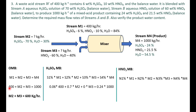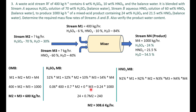From the overall mass balance: m2 + m3 = 1000 − 400 = 600 kg/hr. This is equation 1. From the sulfuric acid balance: 0.06 × 400 gives 24, plus 0.7 × m2 = 240. Rearranging, we can find m2, which comes to be 308.6 kg/hr.